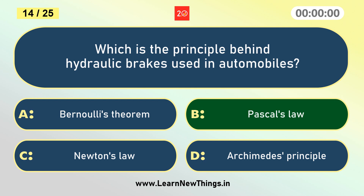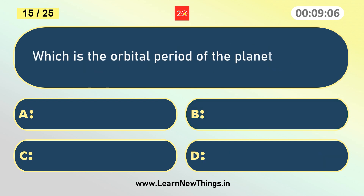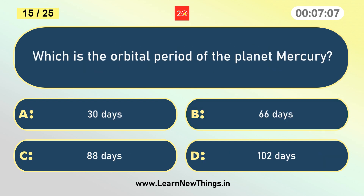Which is the orbital period of the planet Mercury? 88 days.